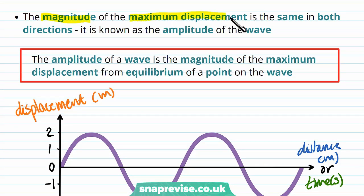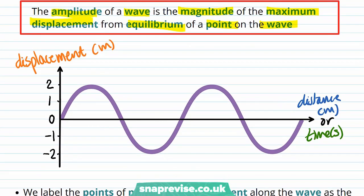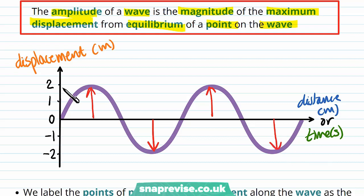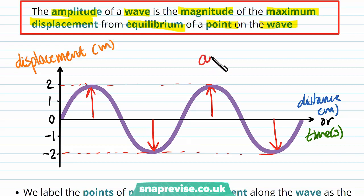The magnitude of the maximum displacement is the same in both directions and is known as the amplitude of the wave. The amplitude of a wave is the magnitude of the maximum displacement from equilibrium of a point on the wave. We can mark on the amplitudes — the points with maximum magnitude of displacement — which can be in the positive direction but also in the negative, since we're looking at magnitude. If the displacement reads two and minus two, the amplitude of this wave is two metres.